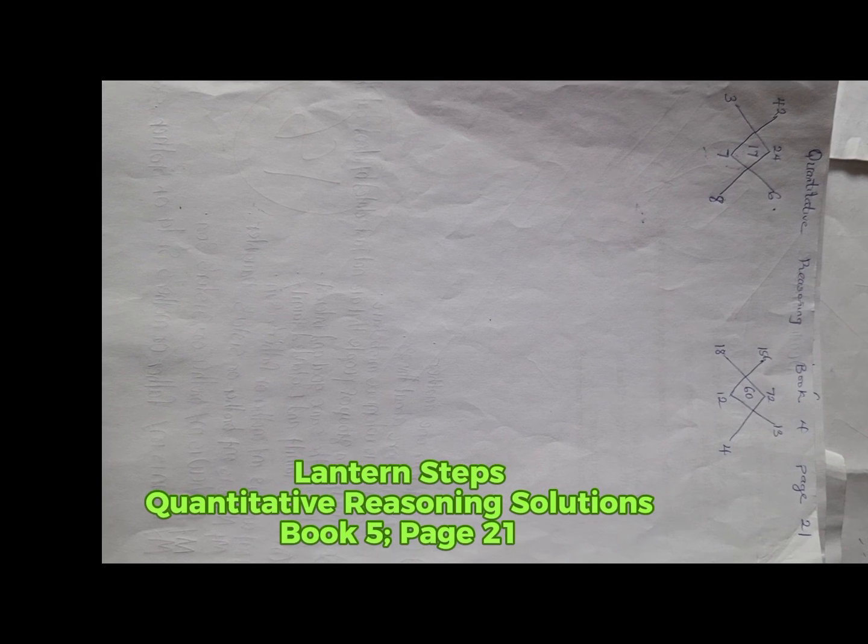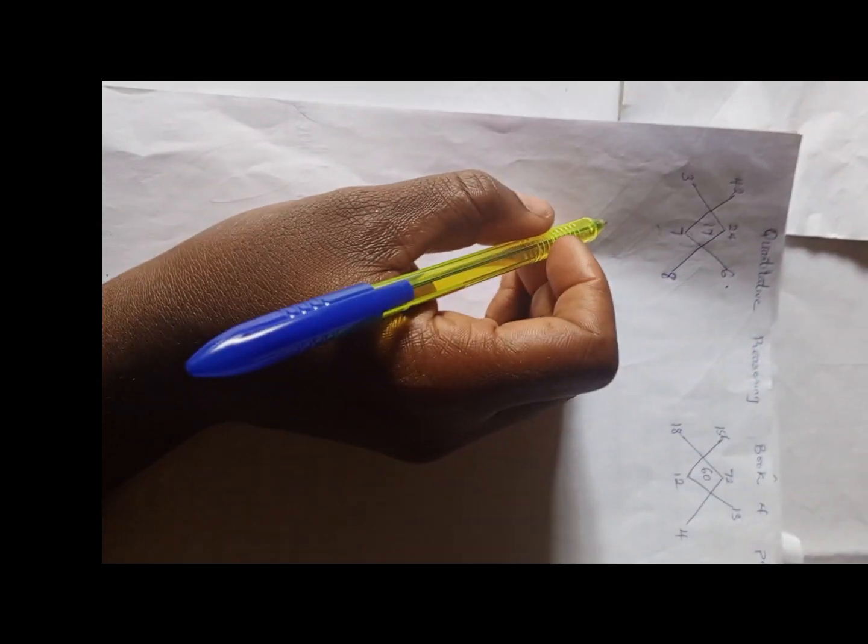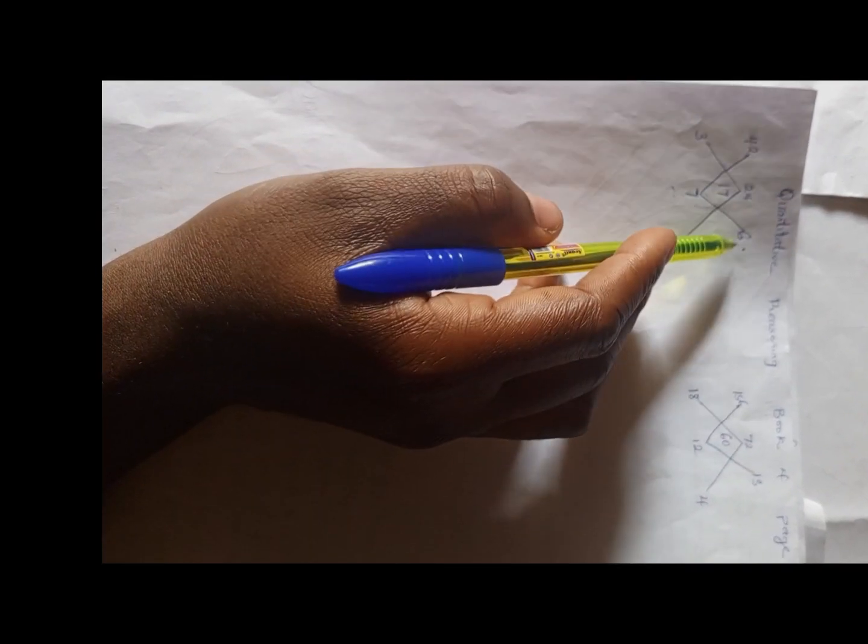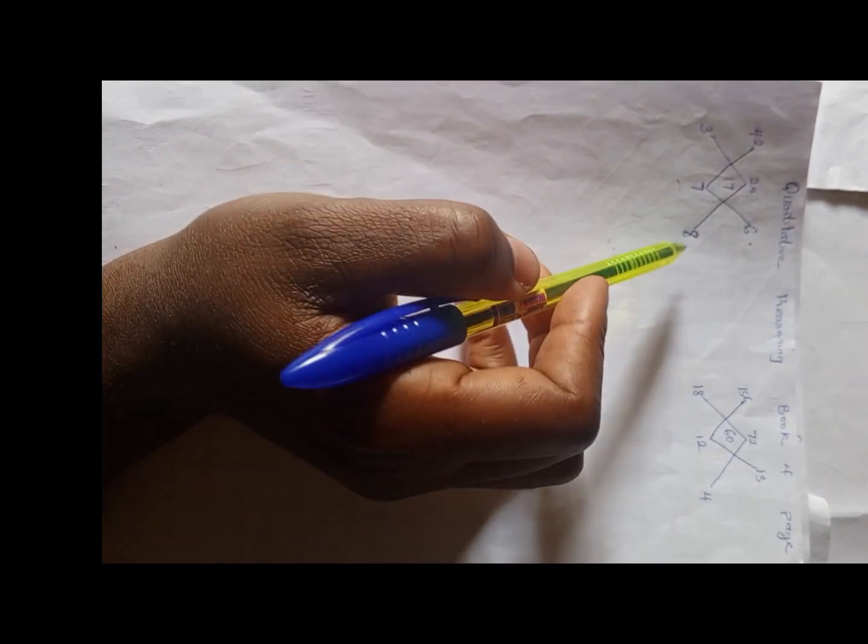Thank you for viewing and joining in today. Today we're going to look at this quantitative solution from Lantern Step Quantitative Reasoning Book 4. So let us look at this: number 42, 24, 6, 17, 7, 8, and 3. And this we have 156, 18, 72, 60, 12, 13, 4.